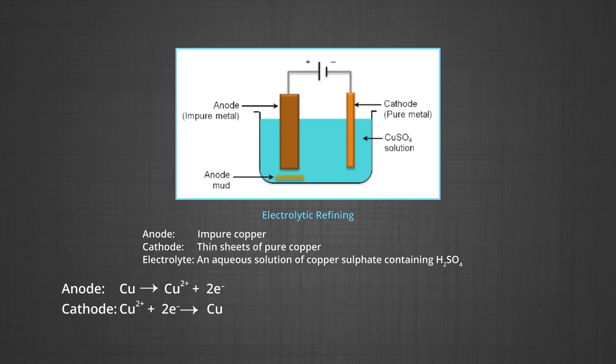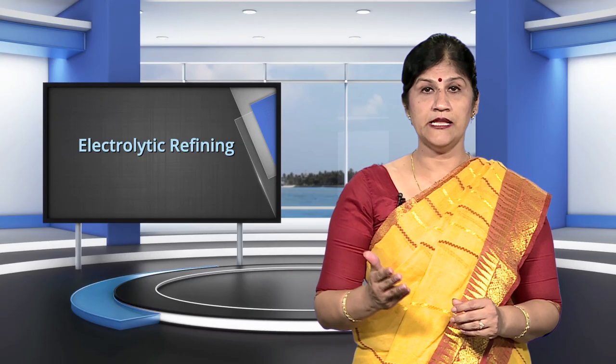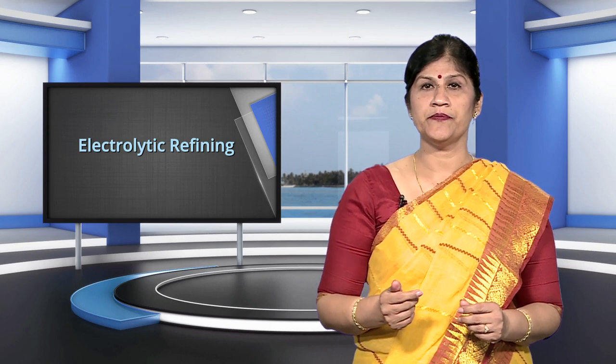The metallic impurities present in the blister copper drop down and deposit as anode mud, which contains antimony, selenium, tellurium, silver, gold and platinum. Recovery of these elements may meet the cost of refining. Zinc, silver, aluminum and lead may also be refined in this way. The metals obtained are of very high purity of the order of 99.9 percent purity.